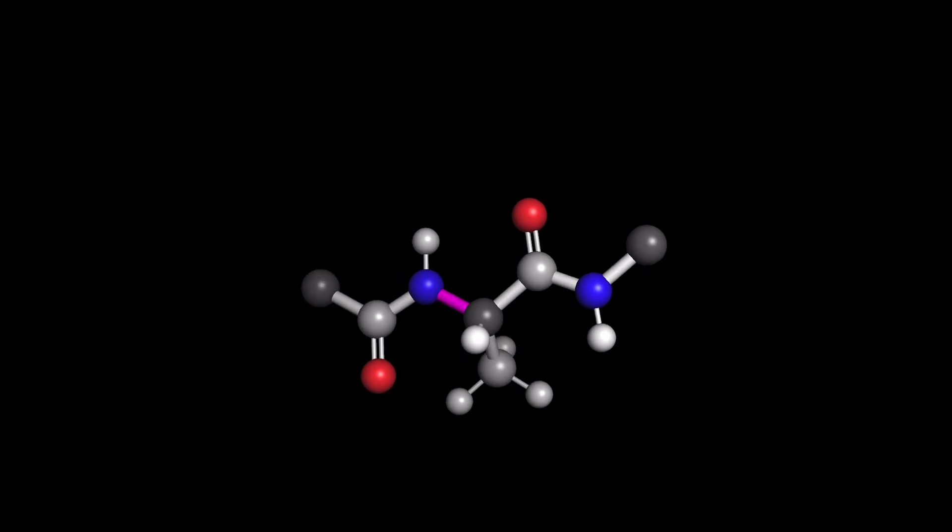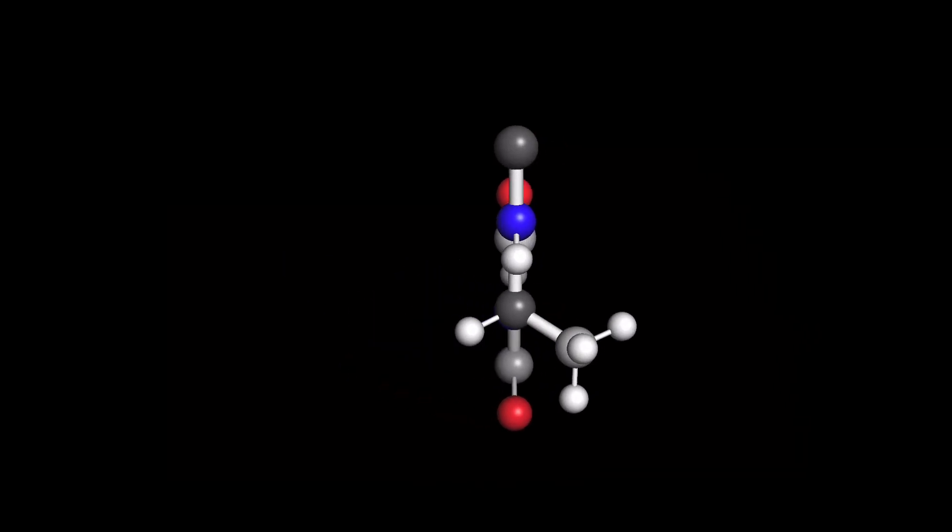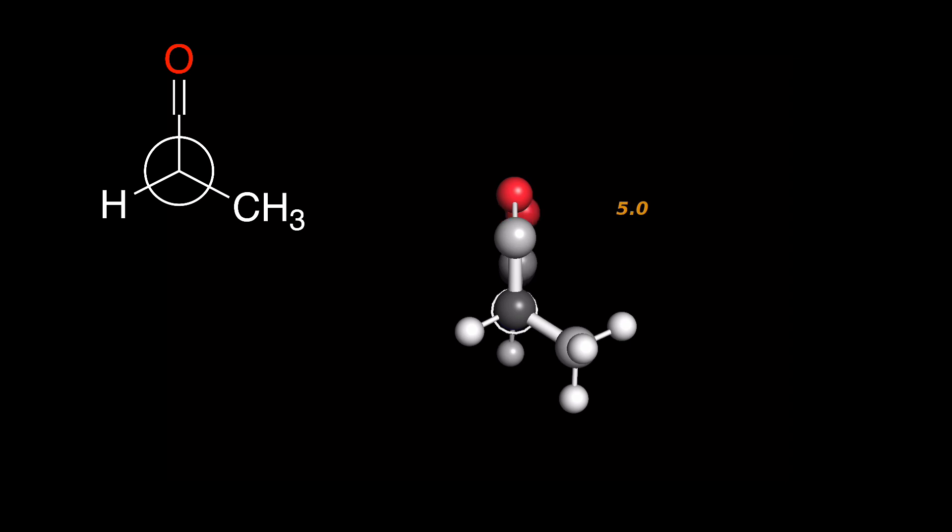Now, it's time to consider what's going on with our back carbon. And, we'll do this in detail for just the Φ angle to start. Let's hide a couple more atoms to make the carbonyl group easier to see. Dihedral angles range in value from negative 180 to positive 180 degrees. If the two carbonyl carbons are eclipsed, the angle is zero.